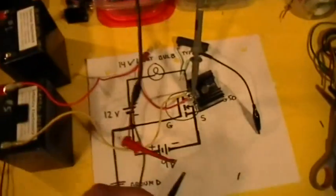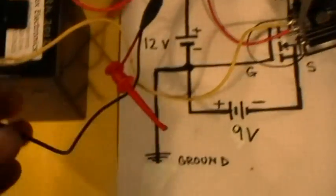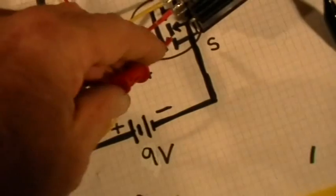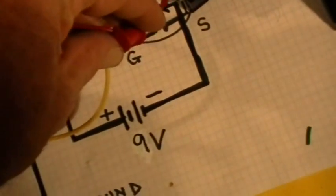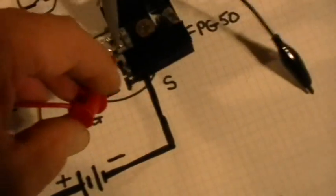Alright, so this is where we left off. We'll put the black lead of the function generator at the common ground right there, just like the Ainsley's do. We'll take the positive lead from the function generator and connect it directly to the source pin of the MOSFET.